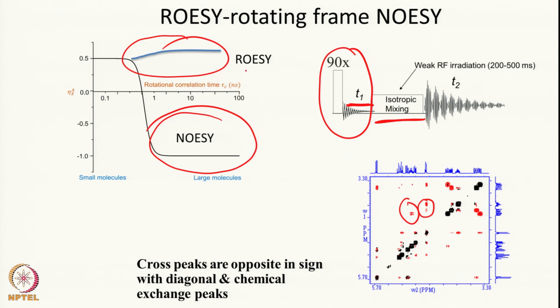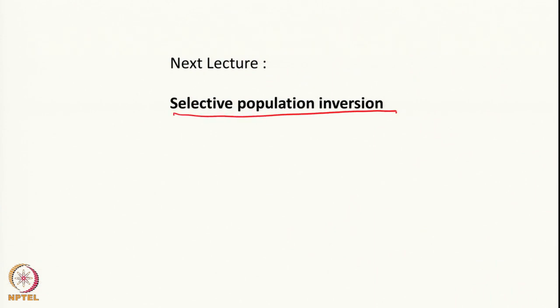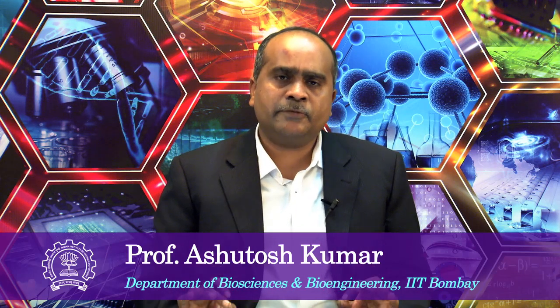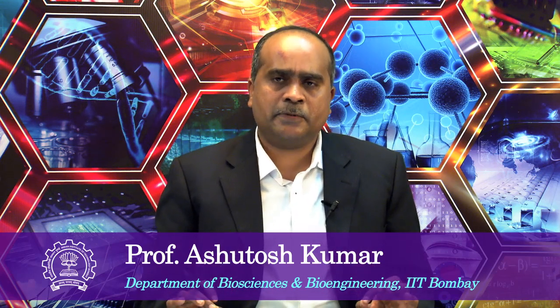So the thumb rule is: ROESY is applied for small molecule distance discrimination. With this, I would like to stop here. In the next class on polarization transfer, we will discuss selective population inversion and what we can achieve by doing this in heteronuclear systems. If you have any questions, please write to us or ask us — we will be happy to answer.